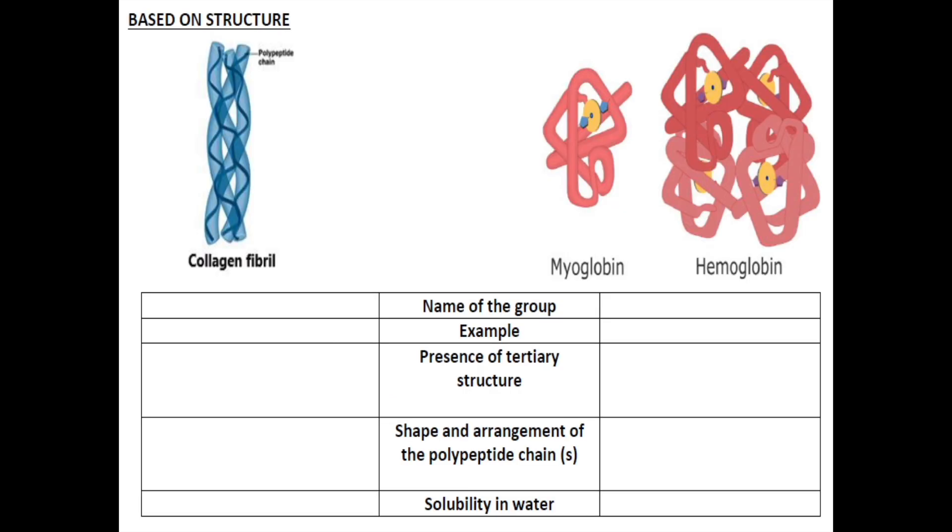Based on their structure, as you can see, there are two groups here. The first group is that it will form a fiber, so therefore we group them into a group called fibrous protein. The example of fibrous protein is collagen and also keratin. As you could have guessed, fibrous protein will mainly form the structural component of your body parts, for example your hair, your nails, and your skin.